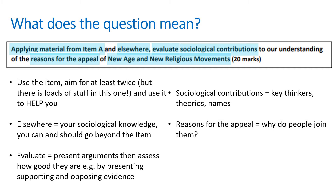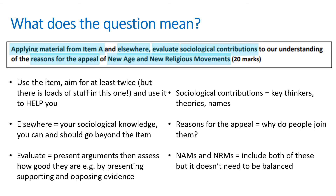'Reasons for the appeal' refers to why people are joining these particular organisations — new age movements and new religious movements. You need to make sure you include reference to both of them. It doesn't have to be balanced; if you feel more confident on new age movements and want to do three paragraphs on NAMs and one on NRMs, that's absolutely fine. Sometimes a point applies to both and you can fit both into one paragraph.